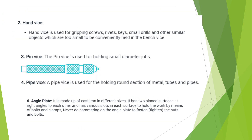A hand vise holds gripping screws, rivets, keys, small drills, and similar small objects. A hand vise is used for work too small to be conveniently held in a bench vise. A pin vise is used for small diameter jobs. A pipe vise is used to hold round sections of metals, tubes, and pipes. An angle plate is made of cast iron and is available in different sizes.